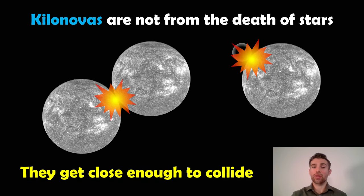Now on to kilonovas. Kilonovas are not the death of a star, these are already dead stars. It can be two neutron stars on the left, or it could be a neutron star and a black hole which is on the right.